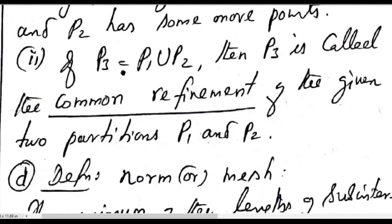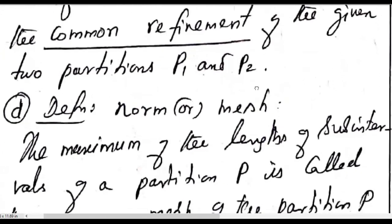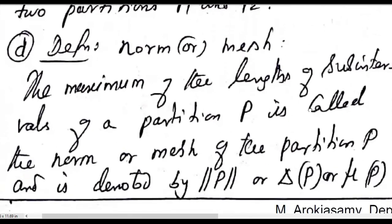If P3 = P1 ∪ P2, that is the union of two partitions gives another partition P3, then P3 is called the common refinement of the two given partitions P1 and P2, because P3 consists of all the elements of P1 and all the elements of P2.